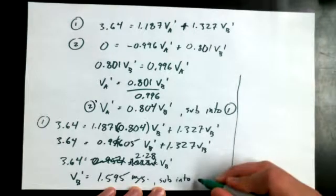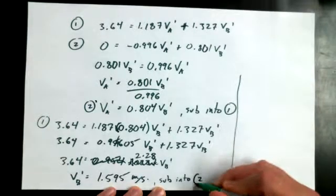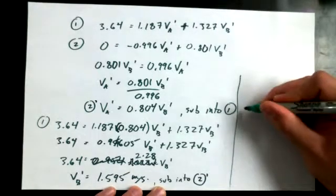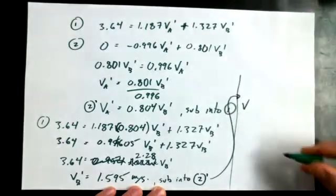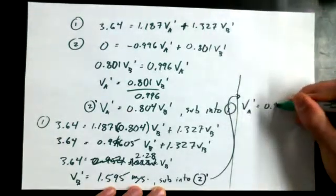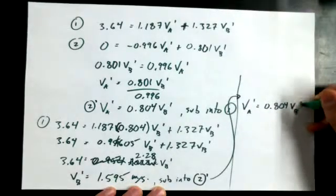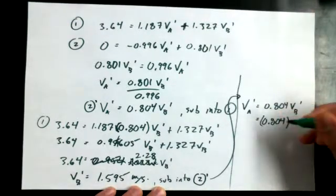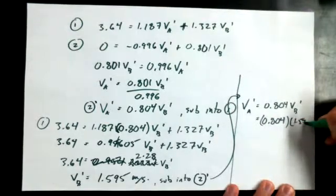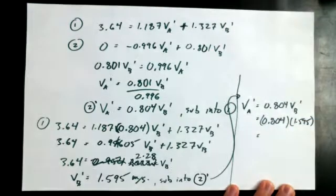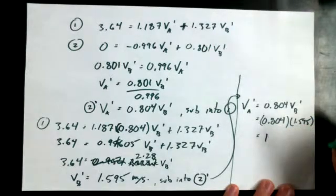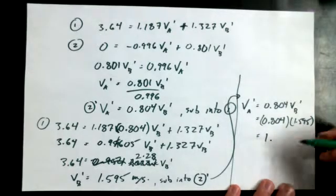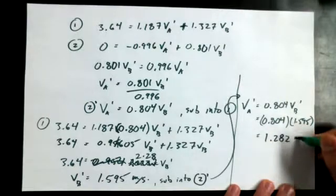And so now I want to say, now that I know VB-primed, I want to sub it back into equation 2-primed, so that I can say that VA-primed is equal to 0.804 VB-primed, or 0.804 times 1.595. What do you get? 1.28. 1.28? Yeah. Nothing after the 8? 2. 3. 1. 1.282? Yes. 1.282 meters per second.